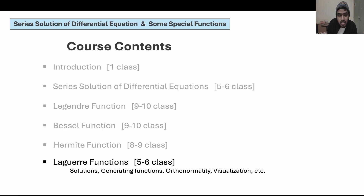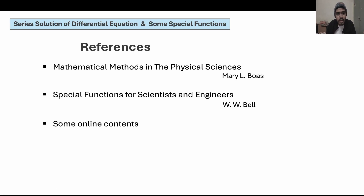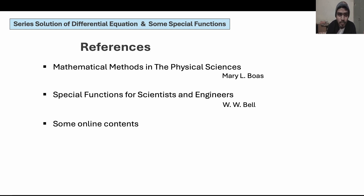The important question is: why are these so important, and what are the applications? Before that, let me talk about the references I am going to use. These are the references: Mathematical Methods in Physical Sciences — this is a very good book for whoever is doing undergraduate physics. The second book, Special Functions for Scientists and Engineers, is also a very good book; I think you all should have that. There are methods of finding the PDF copy, so I think you can manage to find this book. I will follow some online contents also. There are other books available — for example, Arfken is also a good book — but I will be following these two books.